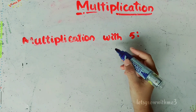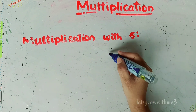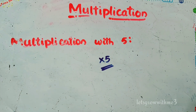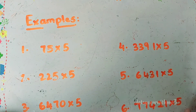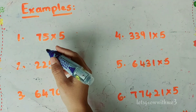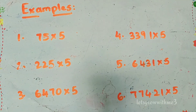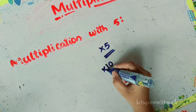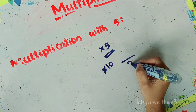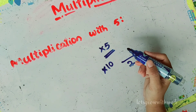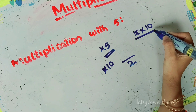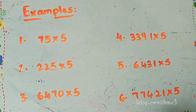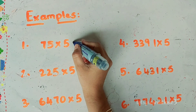So in this case, we need to make 5. Let's take an example. This is the concept you can do with this. It's just 75 times 5.